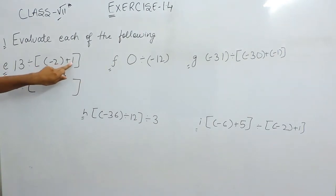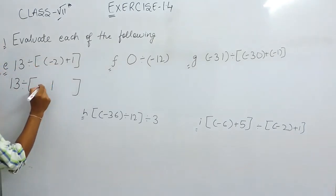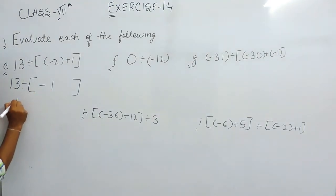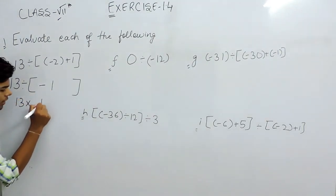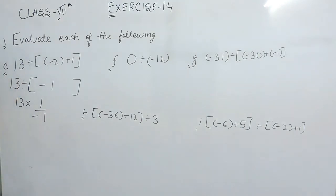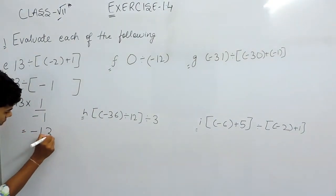Minus 2 plus 1. First of all we subtract the terms normally, and then we'll put the number with a greater sign. Means this minus 1 will be in our bracket. Now 13 multiplied by 1 upon minus 1, and as I told you that minus sign either in the numerator or in the denominator means the same. So answer will be minus 13.